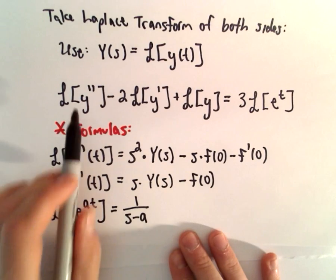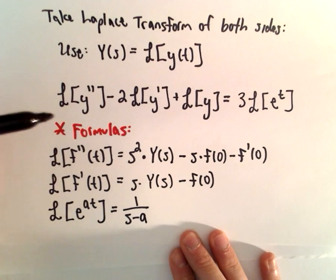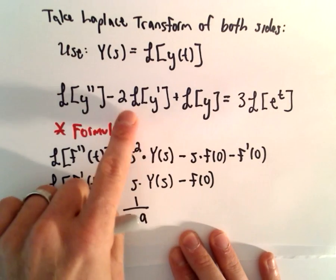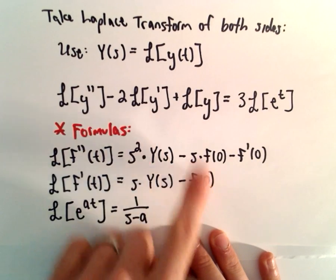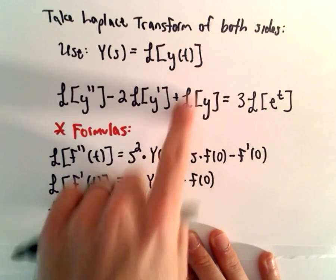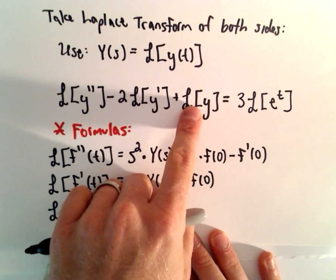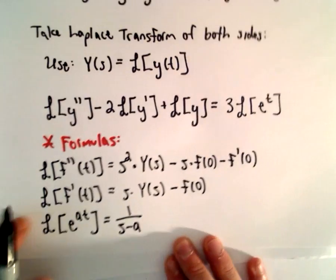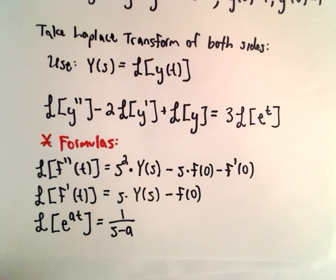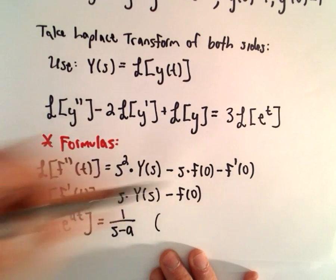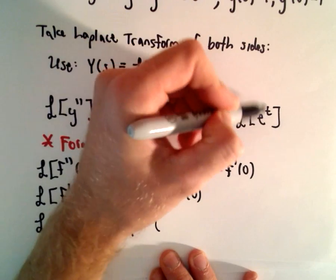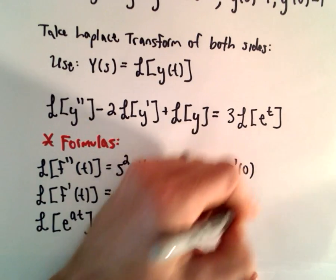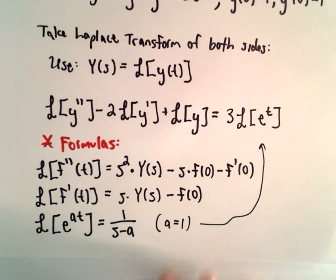I'm just going to replace the Laplace transform of y double prime with that first formula, the Laplace transform of y prime with the second formula, and the Laplace transform of y as capital Y of s. For the Laplace transform of e to the t, notice in our example we can write this as e to the 1 times t, so a is simply equal to 1 when we fill it in.